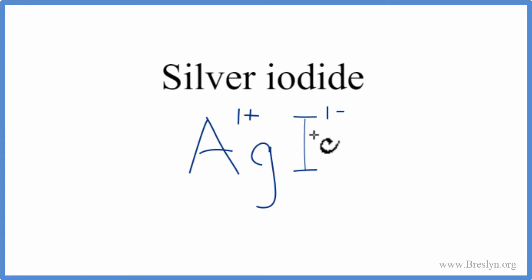So 1 plus, 1 minus, our net charge is 0. That makes this the formula for silver iodide, AgI.